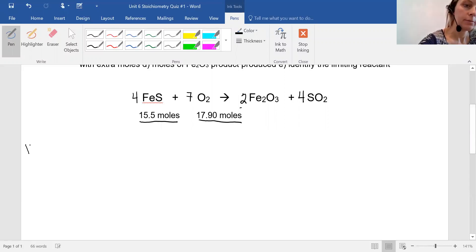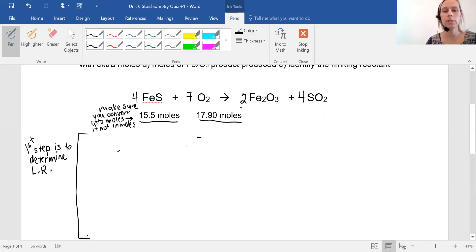And so your first step, well, I'm going to make note of it here. So you want to make sure you convert into moles if not in moles. However, they are moles. So we're okay. So the first step then is to determine the limiting reactant. And I told you we can just use LR for the limiting reactant symbol. So I'm going to bracket this off so it's focusing on just, you're just figuring out which one limits it here.